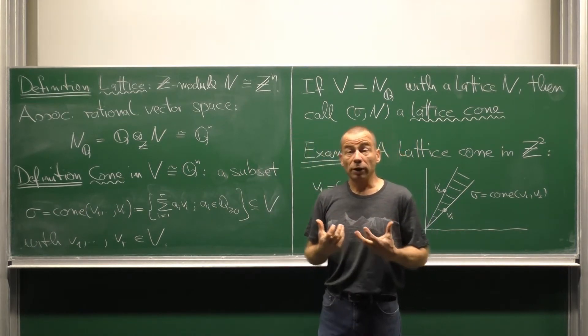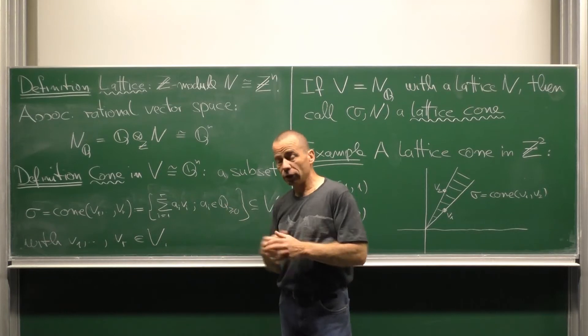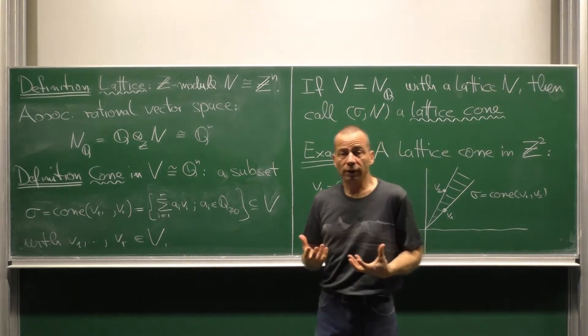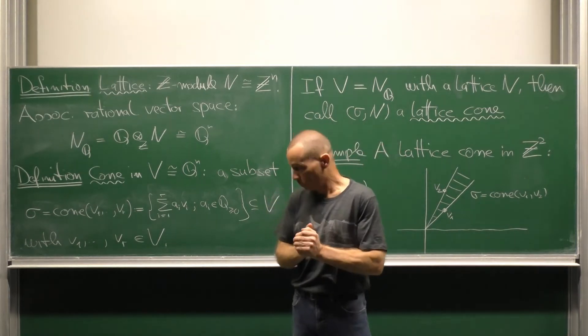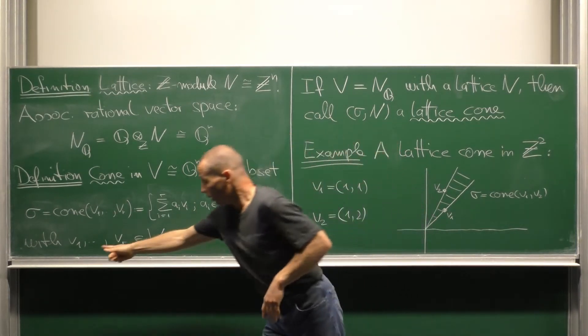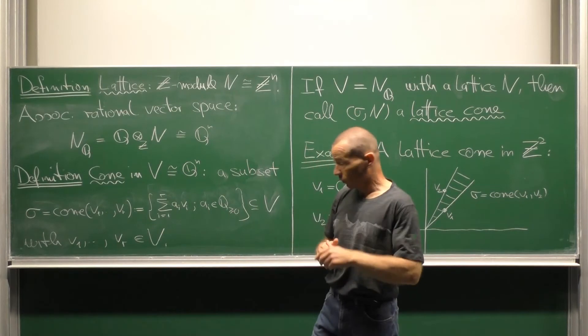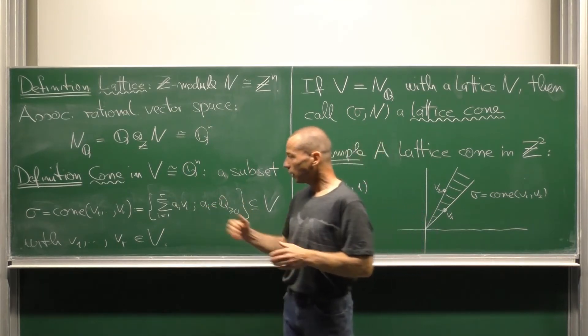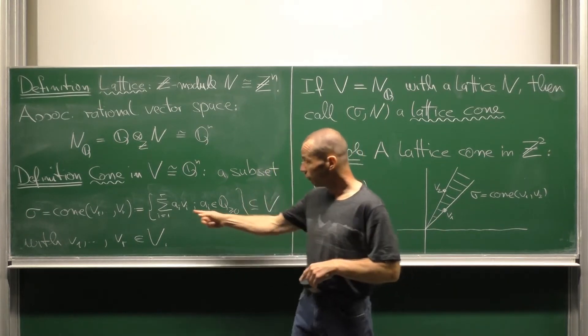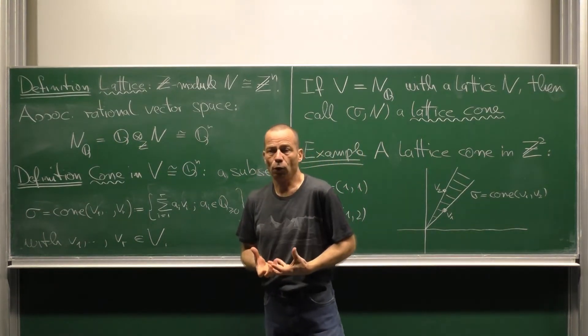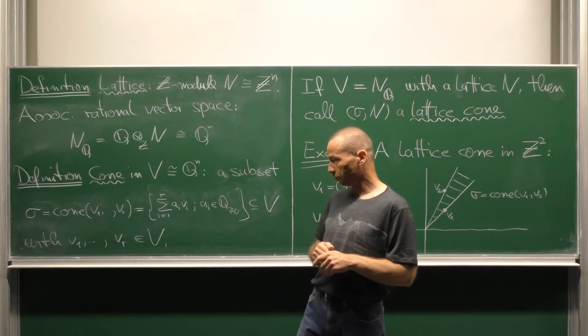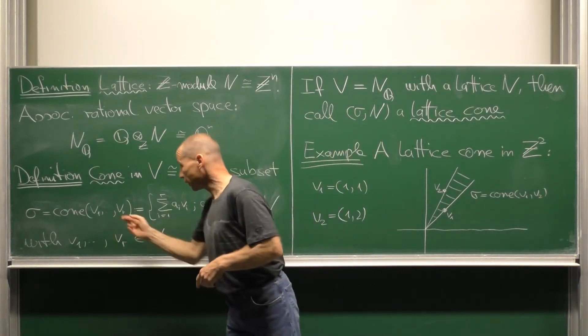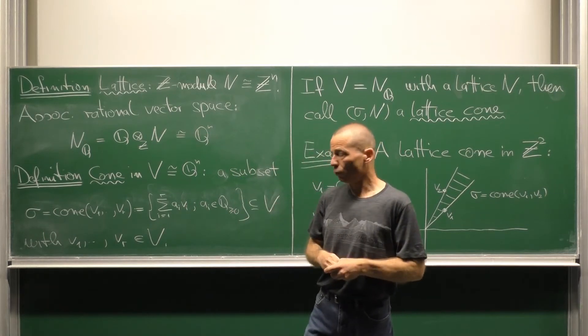What do we mean by a cone in a finitely generated rational vector space? A cone is a subset of the following form. Take finitely many vectors v1 to vr and look at the set of all non-negative linear combinations over the vectors v1 to vr. We call this set the cone generated by v1 to vr.